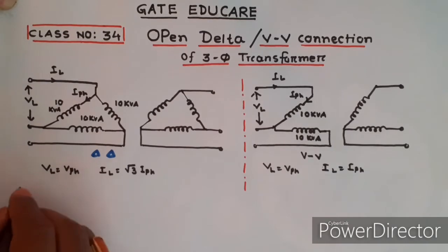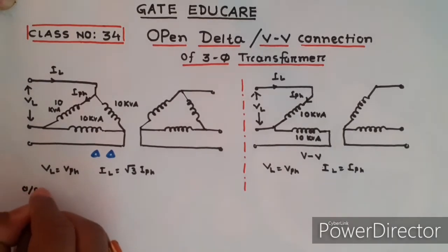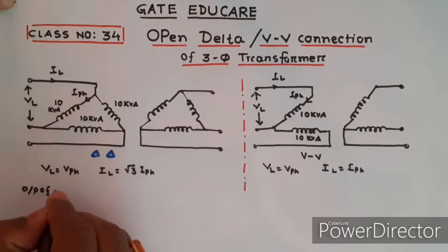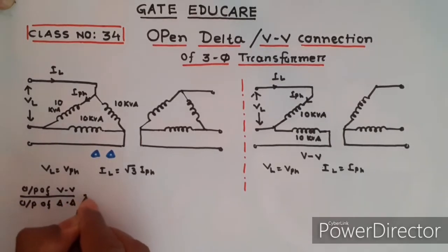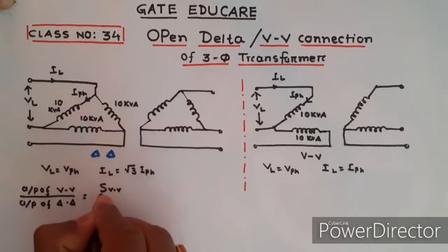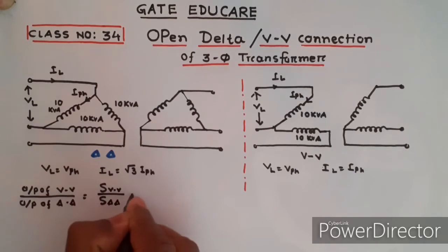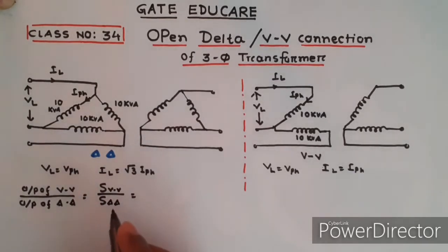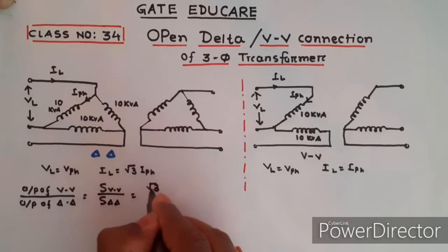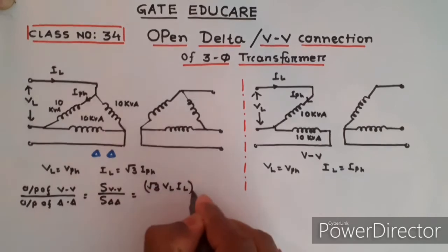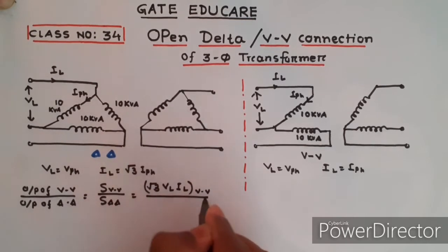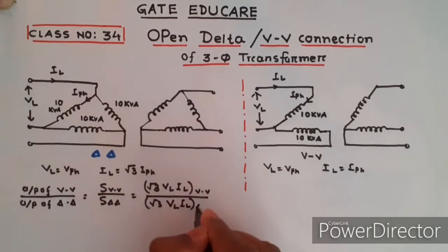Now the output ratio: output of V-V connection divided by output of delta-delta connection equals kVA of V-V divided by kVA of delta-delta. The kVA is given by root 3 times VL times IL, applied to both the V-V connection and the delta-delta connection.